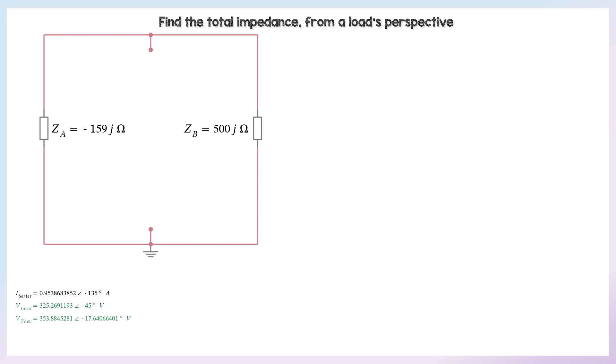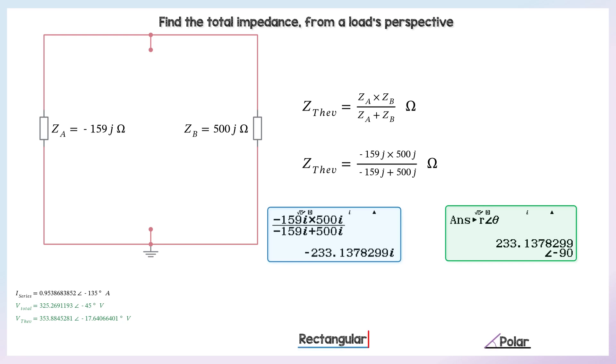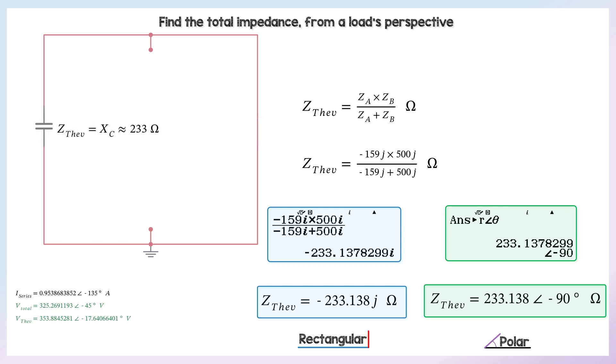So find the total impedance now from a load's perspective. So if the load was there, it would see those two as in parallel. So we do product over sum, which is the easiest way. ZA times ZB over ZA plus ZB comes out as 233 ohms or minus 233 J. So from a load's perspective, the overall impedance is capacitive.